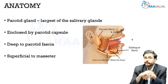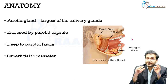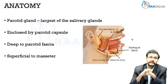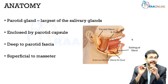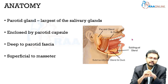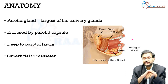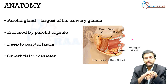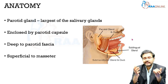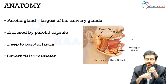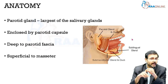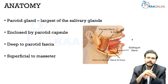It is very important to know that we have three major salivary glands in the body and more than 800 minor salivary glands located in various locations in the head and neck region. The three major salivary glands are the parotid, the submandibular gland, and the sublingual gland.